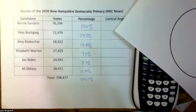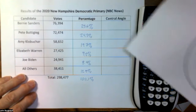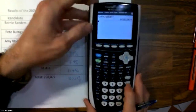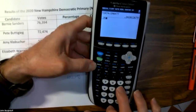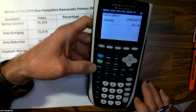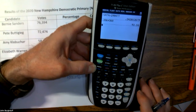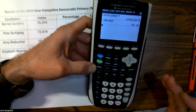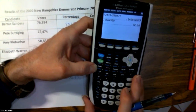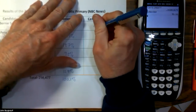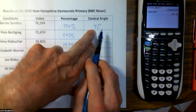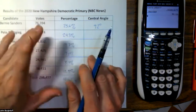Let's do that with the data we're looking at now. Bernie Sanders got 25.6% of the vote. Out of 360 degrees, we take 0.256 and multiply it by 360 degrees, and that gives us 92.16 degrees. Now we're going to measure our angles using a protractor, and there's no way to be as accurate as 92.16 degrees, so we're going to round everything off to the nearest degree. Bernie Sanders got 25.6%, which represents a 92-degree central angle.